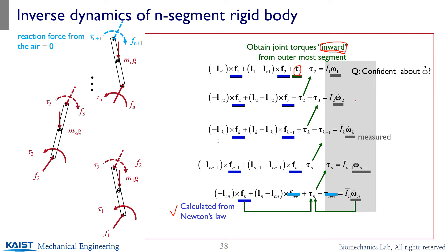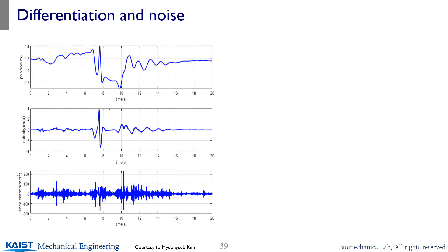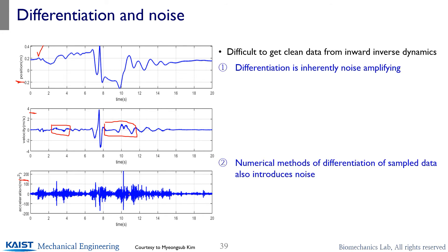Usually motion capture systems measure position, so to perform inverse dynamics you have to calculate angular acceleration by taking the second derivative of your angle measurements. The problem is that differentiation causes noise amplitude amplification. For example, if you look at a position measured by a marker from a motion capture system, taking the first derivative already shows noticeably amplified noise. Taking the second derivative makes the acceleration look really noisy, because this is an inherited characteristic of signal differentiation.